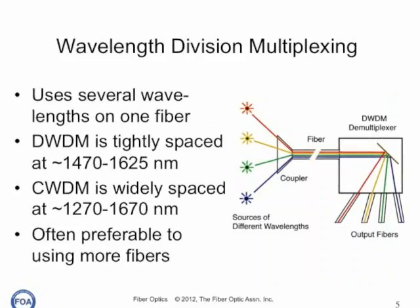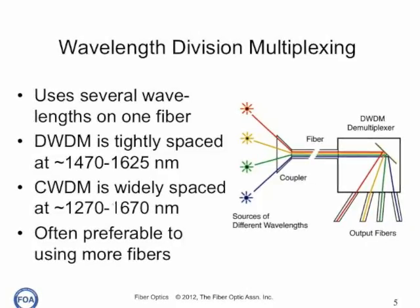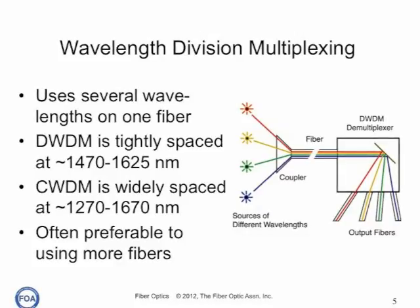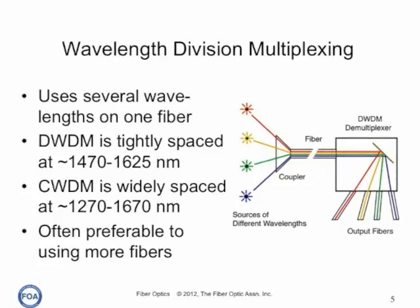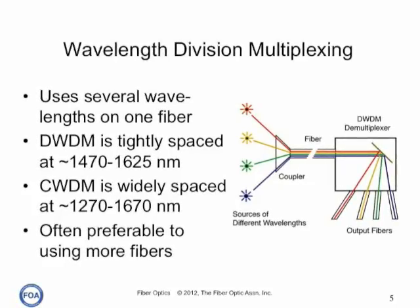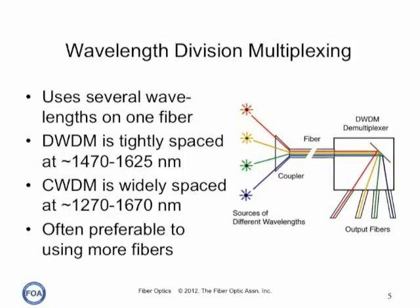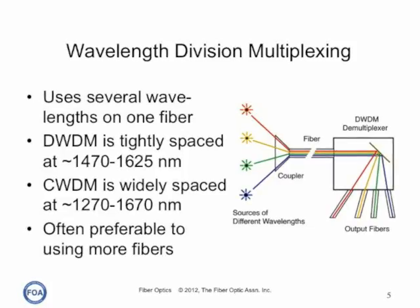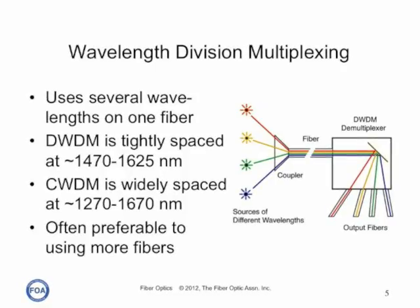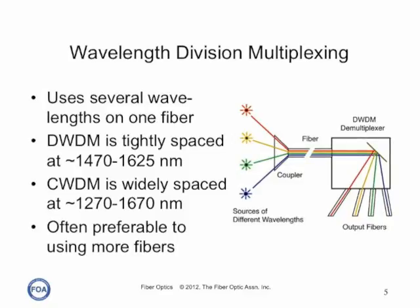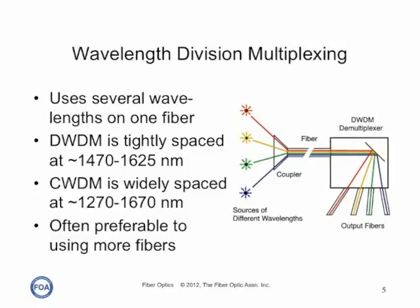Wavelength division multiplexing puts different signals on the same fiber at different wavelengths. DWDM, dense wavelength division multiplexing, uses very tightly spaced wavelengths around 1470 to 1625 nanometers. Coarse wavelength division multiplexing uses much wider spaced wavelengths over the entire range of 1270 to 1670 nanometers, and requires special low water peak fibers. Most telcos these days prefer to use more wavelengths instead of more fibers, because it's simpler and easier to implement.